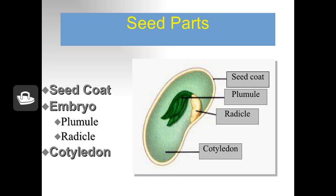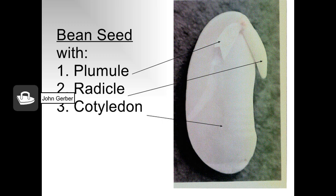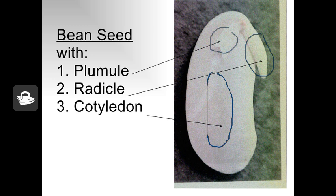The young embryo has two parts: a plumule, which will become the leaves, and a radicle, which will become the roots. If you open up a bean seed, you can see the little plumule — a tiny baby leaf — and the radicle, which will grow down to a root. Most of the seed is made up of cotyledon, the endosperm, which will feed the growing embryo.